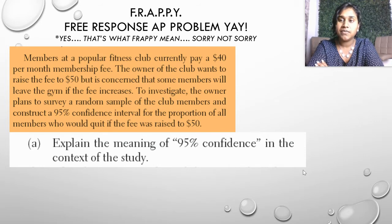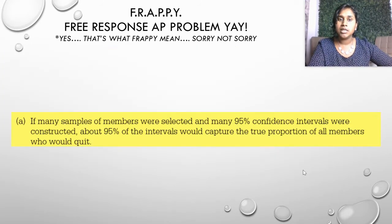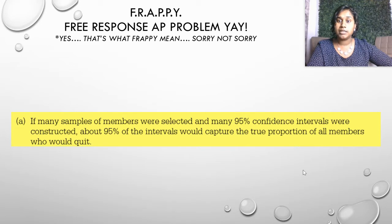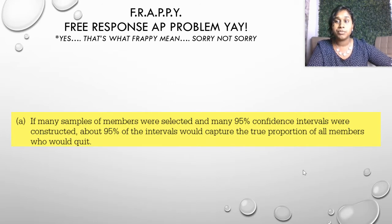Part A: Explain the meaning of a 95% confidence interval in the context of the study. If many samples of members were selected and many 95% confidence intervals were constructed, about 95% of the intervals would capture the true proportion of all members who would quit. That's simple.